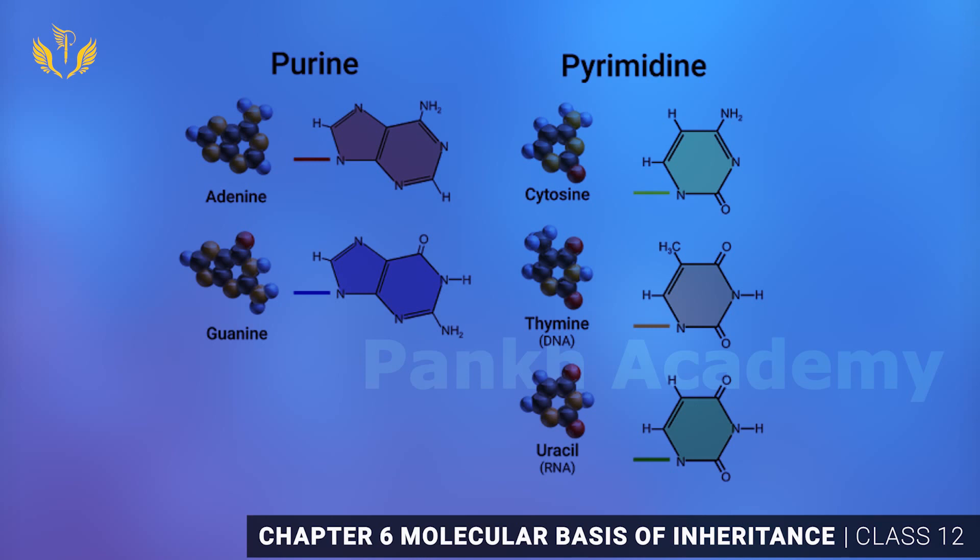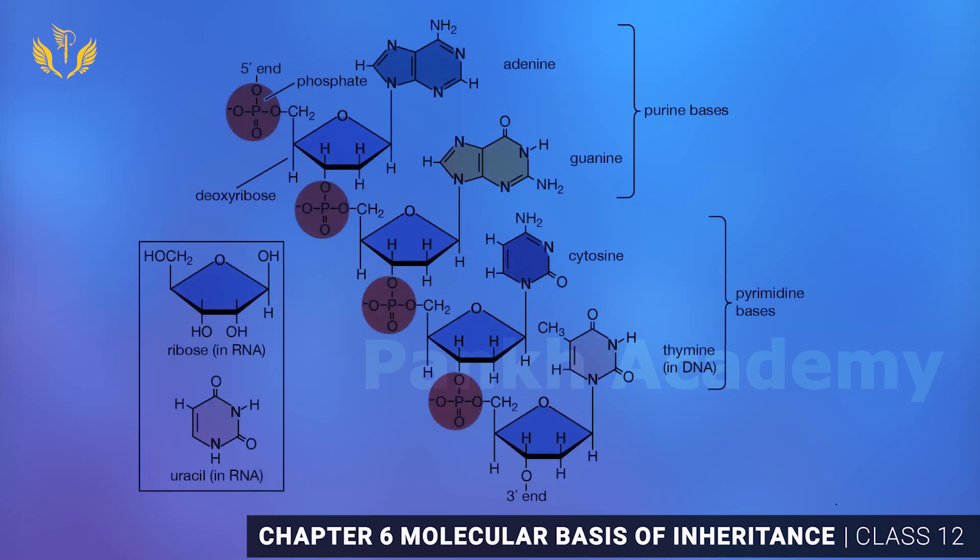Now we will talk about the polynucleotide chain. You can see on your screen that all the nucleotides are connected by phosphodiester bonds. In the diagram you will see phosphodiester bond, 5-carbon sugar, and nitrogenous base — all these things you will understand in the structure.